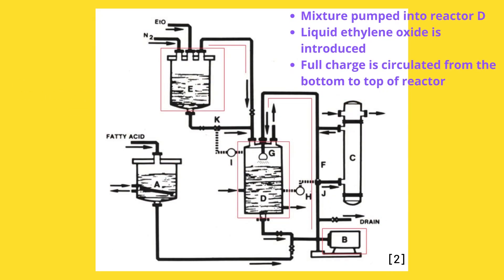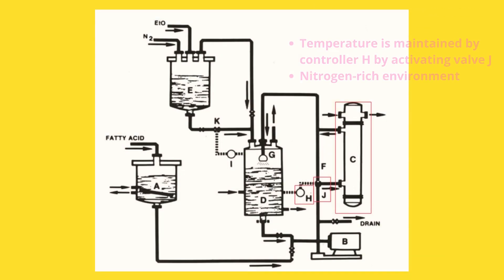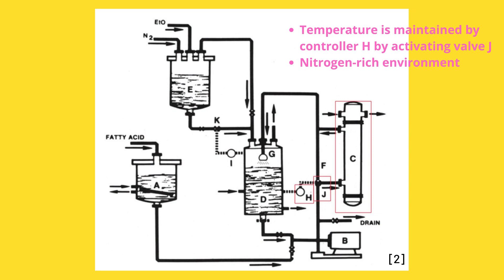The mixture is pumped into the top of the reactor D through the spray nozzle G by pump B and line A. Feed tank E introduces liquid ethylene oxide under nitrogen pressure into the top of reactor D, where it vaporizes and meets the atomized feed. The full charge is circulated from the bottom of the reactor to the top via line F or heat exchanger C. Controller H maintains the reactor temperature by activating valve J, which directs a portion or all of the circulating feed through heat exchanger C.